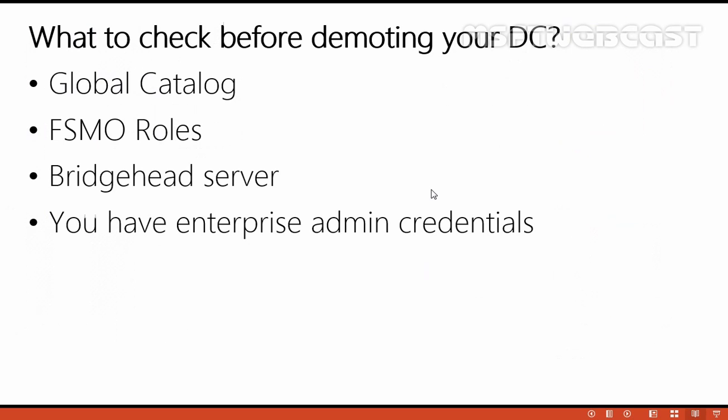Now, what things do we need to check before we demote our Server 2003 domain controller? The first thing you need to check is that you must have at least one global catalog server. If you remove the last remaining global catalog server from a domain, you will experience logon issues across the domain, along with other functions like search and lookups. So you have to make sure that in your domain, at least at the Active Directory site level, you have one global catalog server. Let's check whether we have a global catalog server or not.